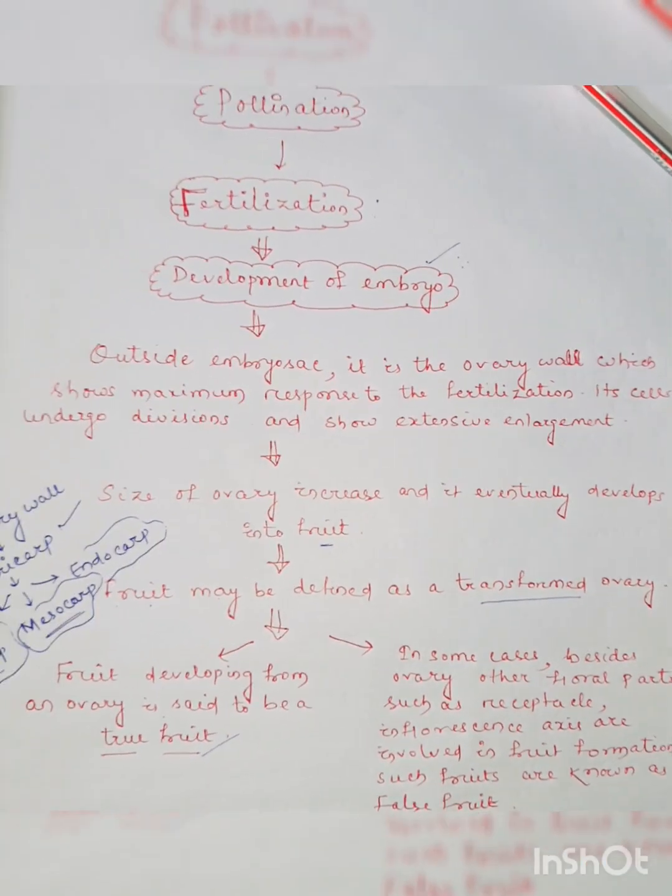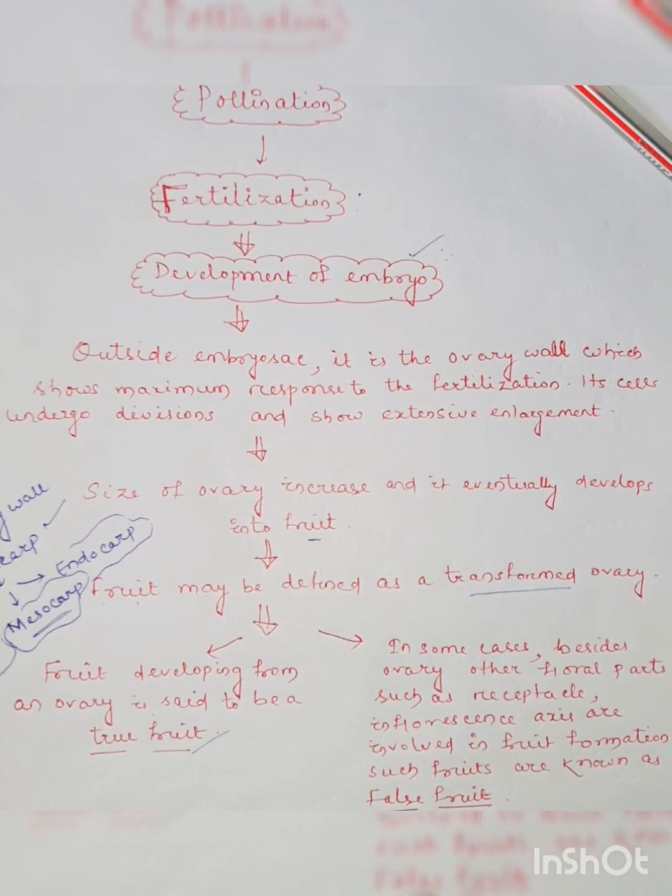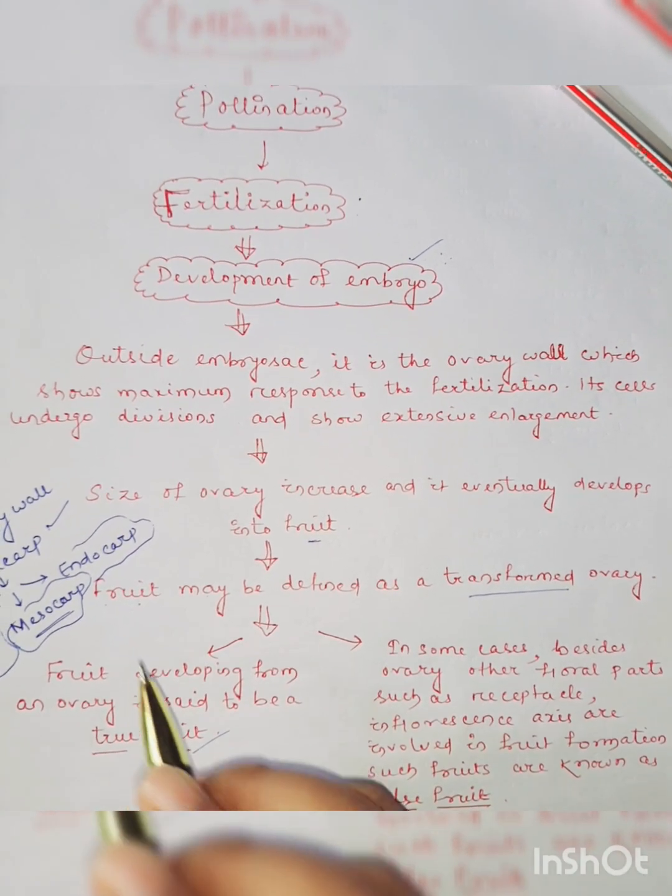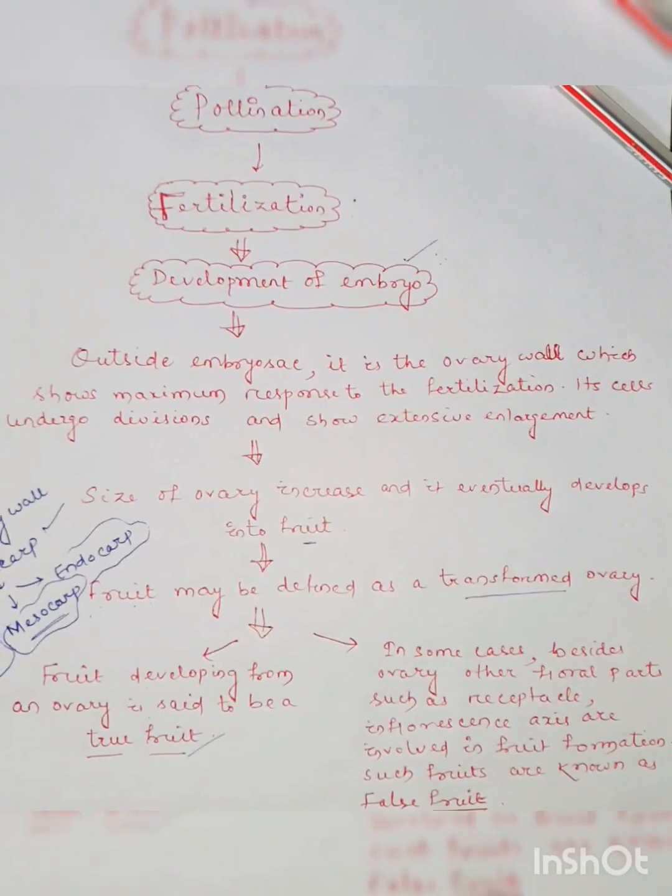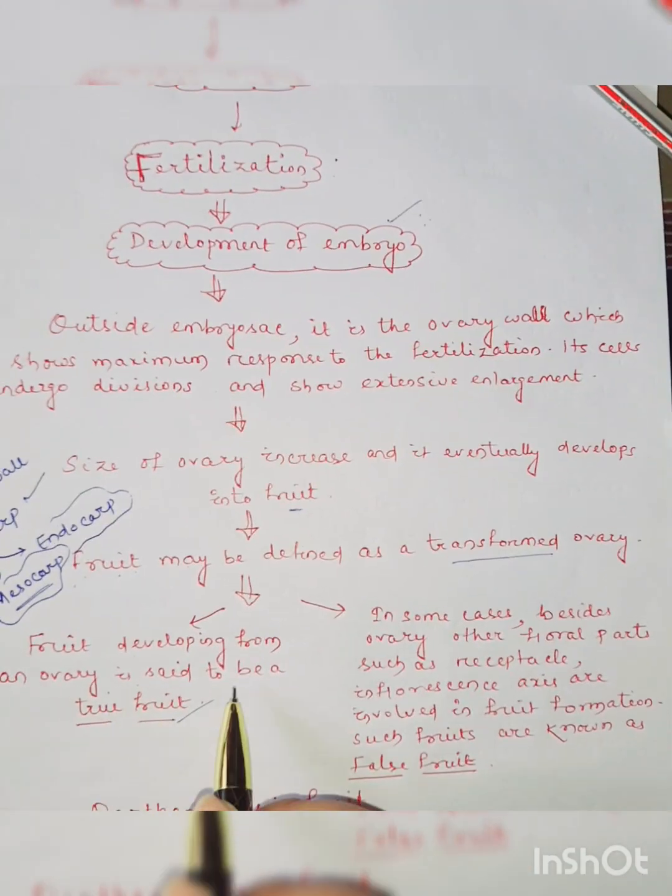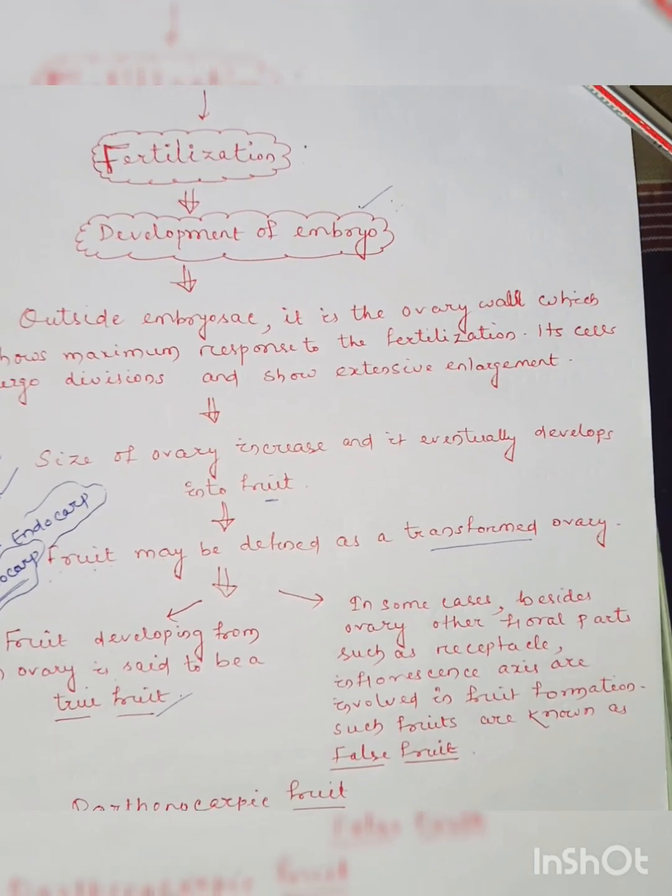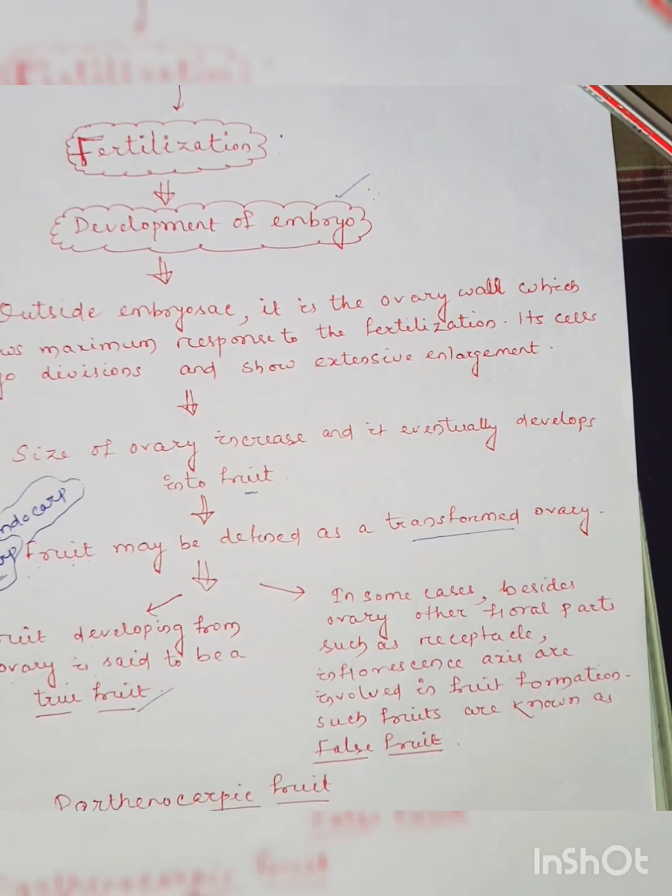Finally you can call it as fruit, and fruit may be defined as a transformed ovary. The total ovary will be transformed into the fruit after the fertilization. Fruit developing from an ovary is said to be a true fruit.